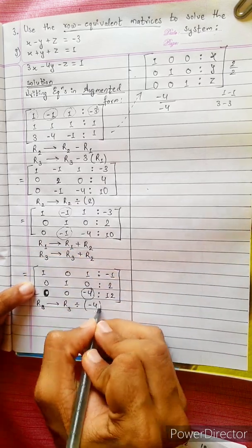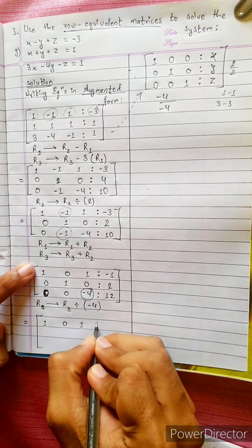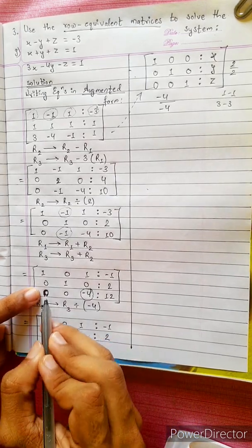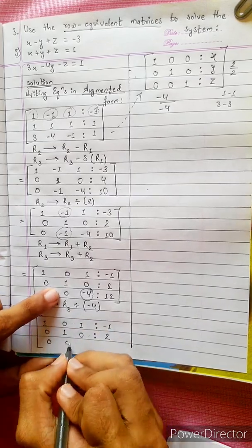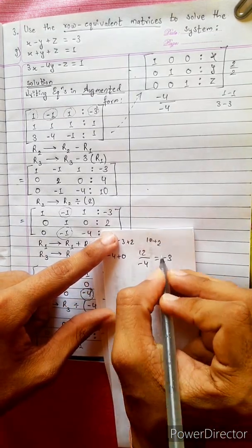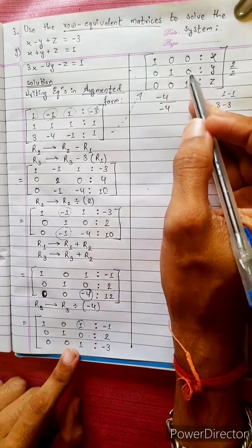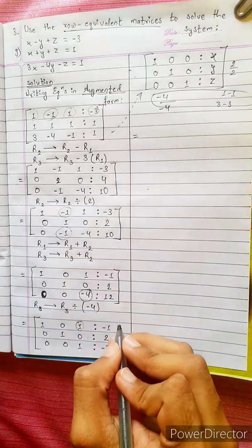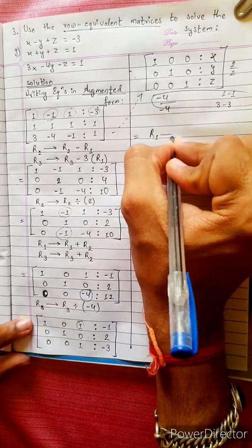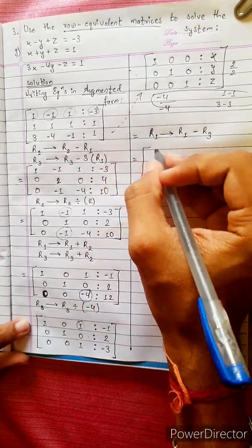I am going to divide by minus 4. Now R1, R2, and R3 will all change. R3 will change: divide by minus 4. 0 divided by something equals 0; 0 divided by something equals 0; minus 4 divided by minus 4 equals 1. 2L divided by minus 4 gives minus 3. Minus 2 minus 3. Now: 1, 0, 0. R2 equals 2. Minus 1. 1 minus 1 equals 0. R1 will change: R1 minus R3. R3 equals 2. 1 minus 0.